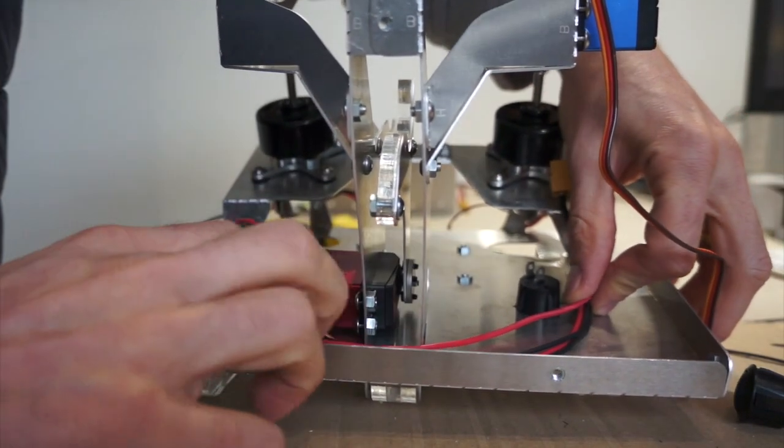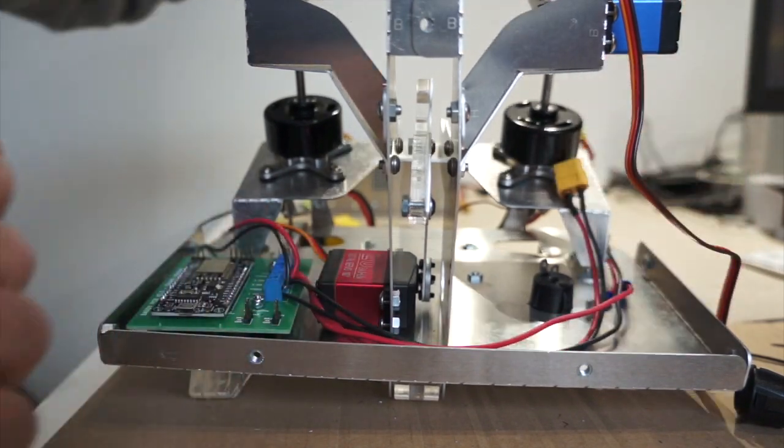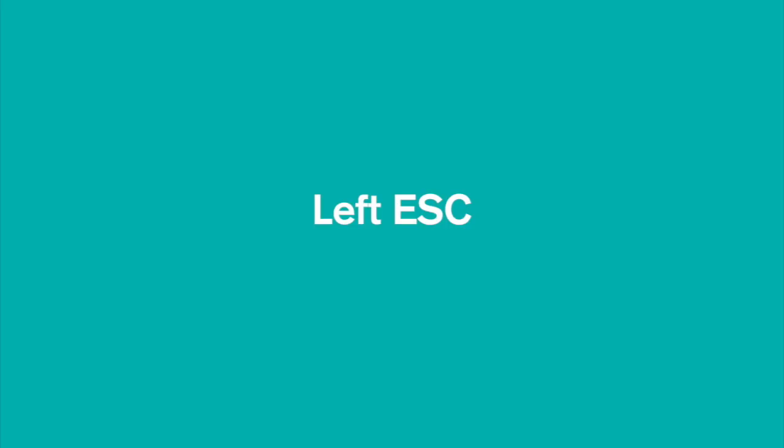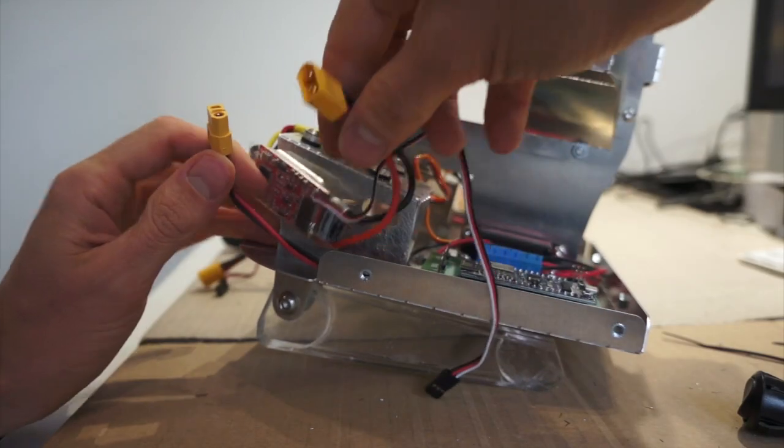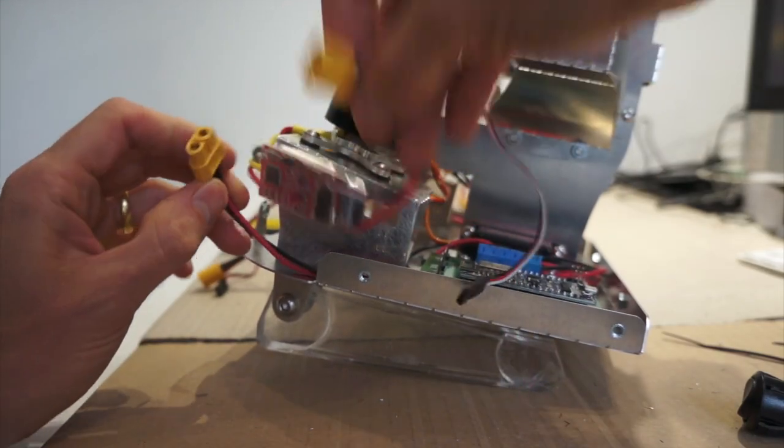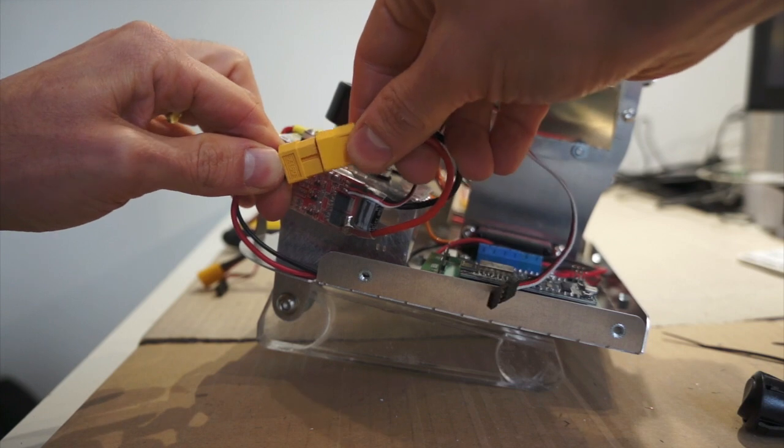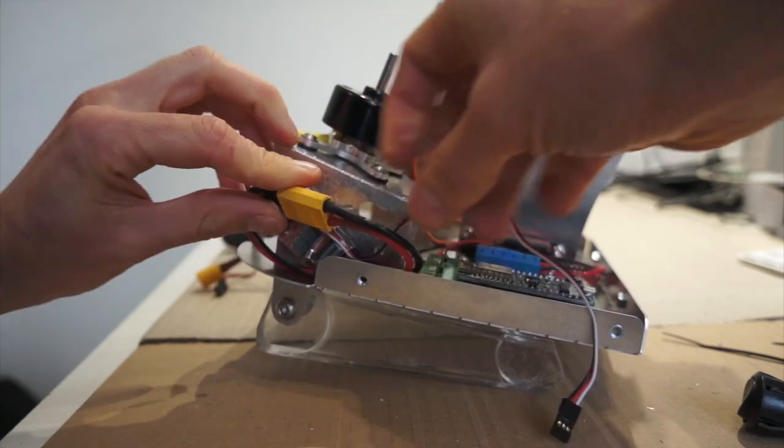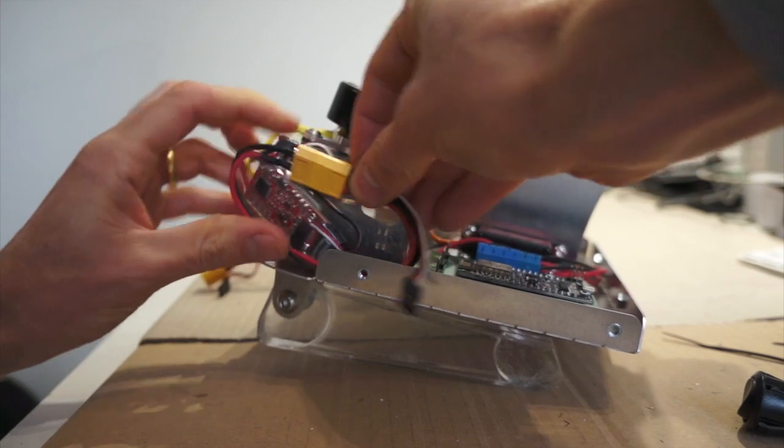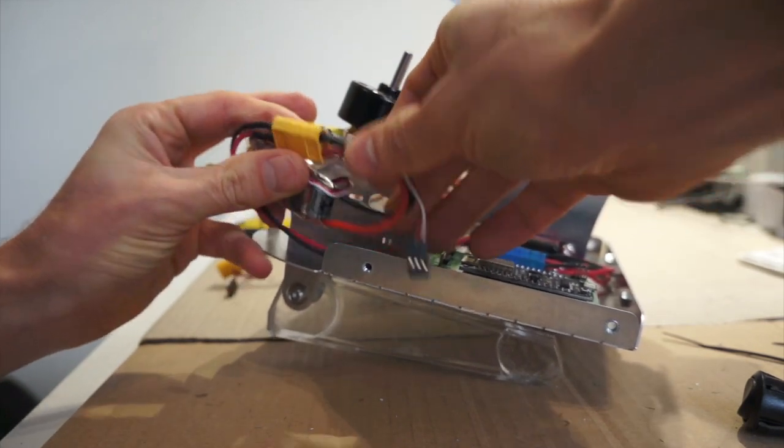Alright, time to plug everything. Let's start with the left ESC. Plug the power connector. And stow the wire using the plastic collar provided with your PCB.